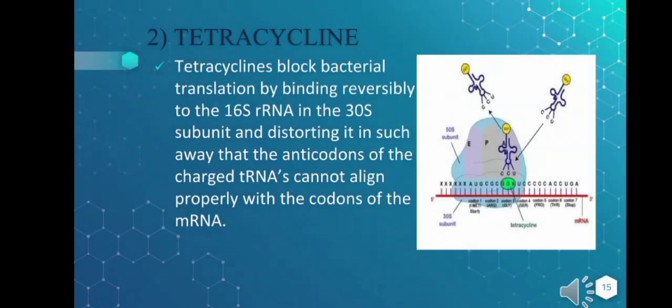The next translation inhibitor is tetracycline, which blocks bacterial translation by binding reversibly to the 16S rRNA in the 30S subunit of the ribosome. It distorts the ribosome in such a way that the anticodons of charged tRNAs cannot align properly with the codons of the mRNA.